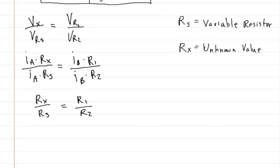And so since we're solving for Rx, we're just going to move the Rs over to the other side. So that's going to look like this. Rx is equal to Rs multiplied by R1 divided by R2.